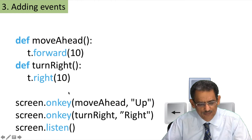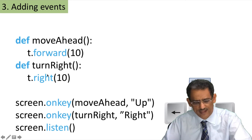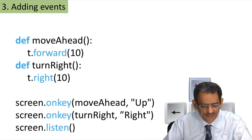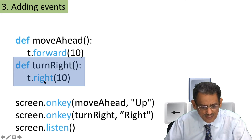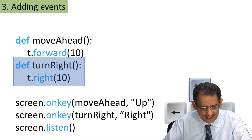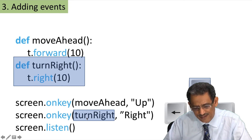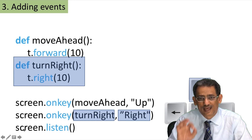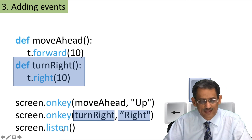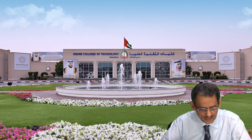Now if we want to add a function that turns the turtle right, we create: def right — and it will change the angle right by 10 degrees. Then we duplicate the on_key line, changing move_ahead to turn_right, and using the action 'Right'. Remember, screen dot listen should always be the last one in your code. This way you are ready for the exercise.